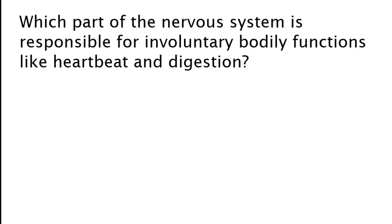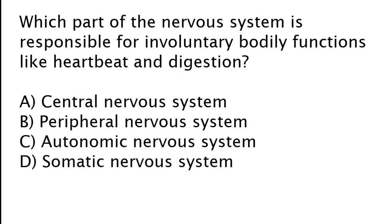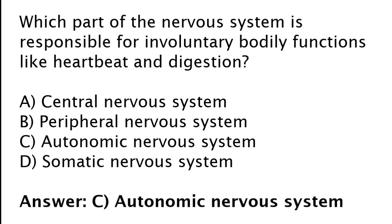Which part of the nervous system is responsible for involuntary bodily functions like heartbeat and digestion? Central nervous system, peripheral nervous system, autonomic nervous system, or somatic nervous system? The correct answer is option C. The autonomic nervous system is responsible for involuntary bodily functions like heartbeat and digestion.